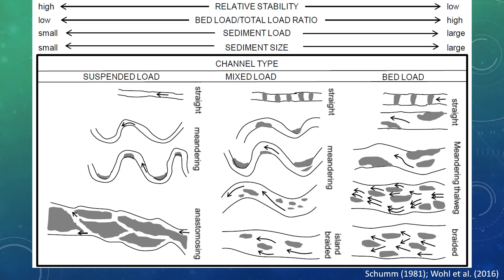This schematic by Shum 1981, modified by Wool et al. in 2016, breaks down the typical appearance of the channel forms within differences of stability, bed load, overall sediment load, sediment size, and the dominant movement methods of sediment, which are suspended load, bed load, or a mix of the two. Please feel free to pause the video here and take time to really understand this graphic, as it has a lot to unpack. I've also provided a link to this report below the video.